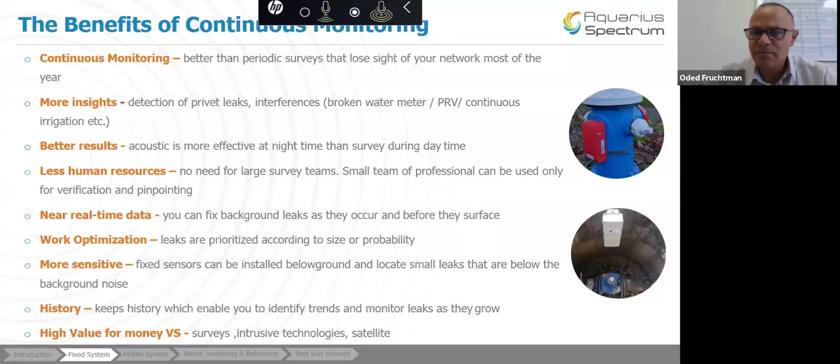Work optimization. Again, one of the benefits of fixed solution is that it allows to prioritize and to also provide probability. We also provide the estimated size of a leak, so you can send your team to those that are the biggest leaks first before you attend to a small one, or you can keep the small one until they come big.